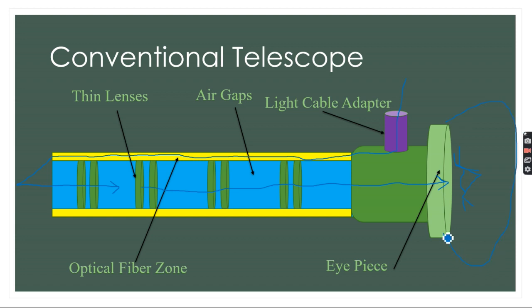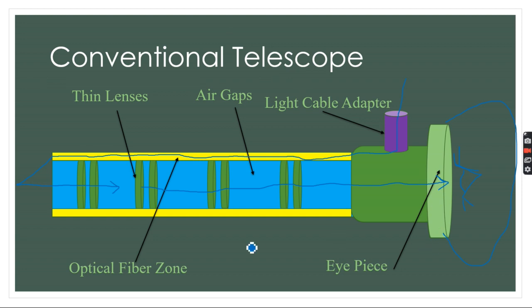A camera head can be mounted over the eyepiece. The camera head consists of the charge-coupled device (CCD) along with a coupler. Due to the presence of larger air gaps in the conventional telescope, the vision is not very good.